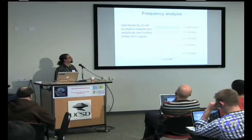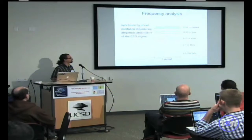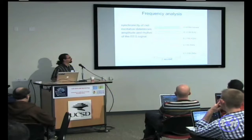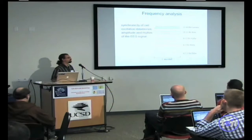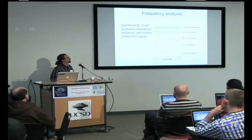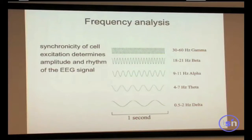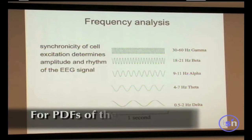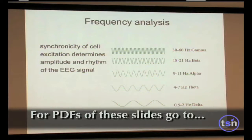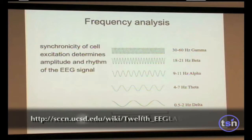This is how EEG brainwaves are usually defined. You have very low frequencies: 0.5 to 2 Hz called Delta, 4 to 7 Hz called Theta, 9 to 11 Hz Alpha, low and high Alpha, 18 to 21 Hz Beta, and 30 to 60 Hz Gamma. It depends on the authors, and when writing a paper it's always better to put the exact frequency range you mean, because different authors mean different things.